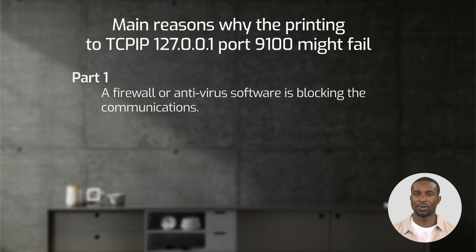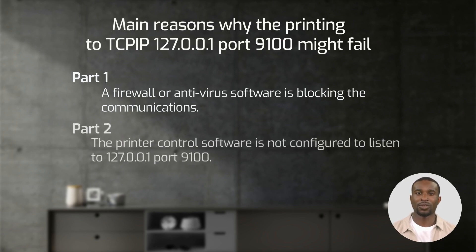In our Part 1 video, we showed you how to check if a firewall or antivirus software is blocking the port. In our Part 2 video, we showed you how to check if the printer control software is not configured to listen to 127.0.0.1 port 9100.